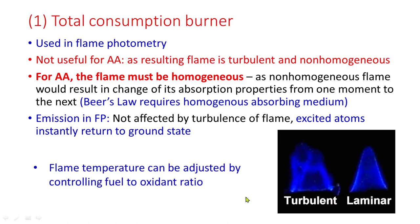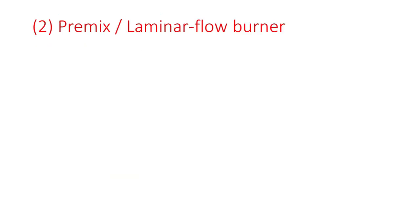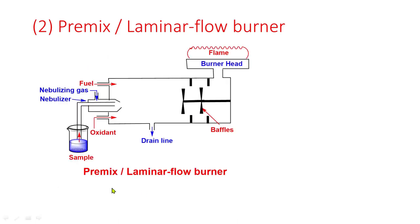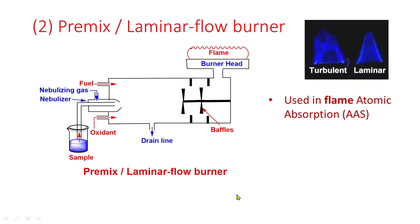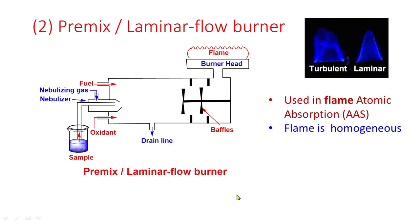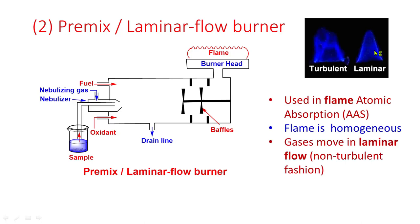Flame temperature can be adjusted by controlling the fuel to oxidant ratio. The second type of burner is the premix or laminar flow burner, used in flame atomic absorption spectrophotometry. The flame is homogeneous and gases move in a laminar, non-turbulent fashion.